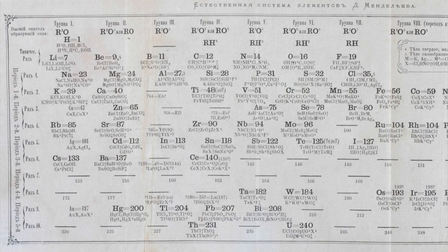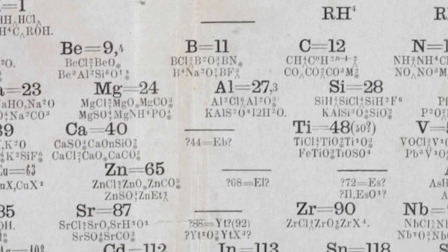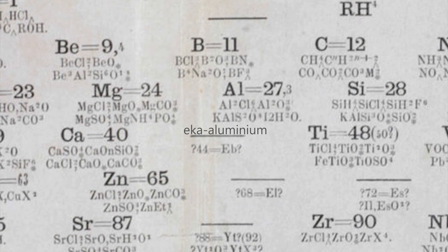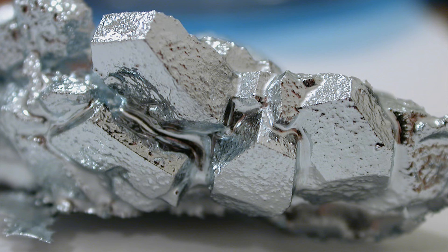For example, here is his early table. He predicted an element should exist right near aluminium and called it eka-aluminium. It was later found within his lifespan there is indeed an element and we call it gallium. The model wasn't perfect though.